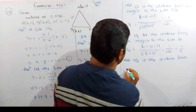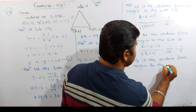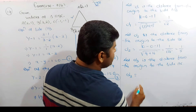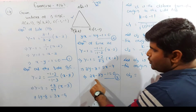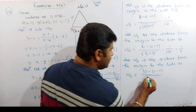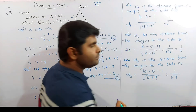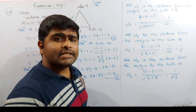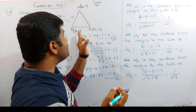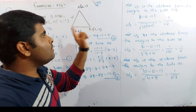D3 is the distance from the origin to side AC: D3 = |0 - 0 - 1| / √(2² + 3²) = 1/√(4 + 9) = 1/√13. So the distances from the origin to the sides AB, BC, and AC are D1 = 1/√2, D2 = 1/5, and D3 = 1/√13 respectively.